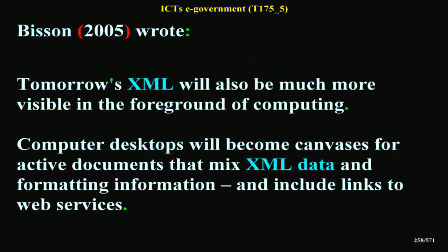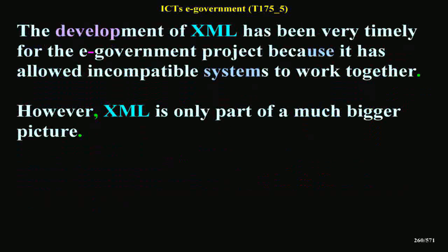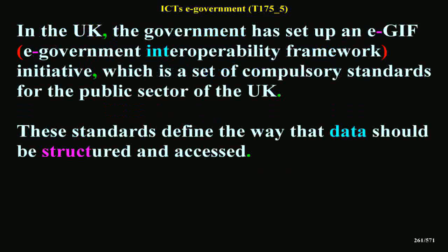Bisson (2005) wrote: 'Tomorrow's XML will also be much more visible in the foreground of computing. Computer desktops will become canvases for active documents that mix XML data and formatting information and include links to web services. Your online tax return will be a document that looks like the paper forms the Inland Revenue sends, but it will be able to work with online calculation services, before delivering XML data directly into the Inland Revenue systems and automatically transferring your refund into your bank account.' In the UK, the government has set up an EGIF — Government Interoperability Framework Initiative — which is a set of compulsory standards for the public sector of the UK, defining the way that data should be structured and accessed.